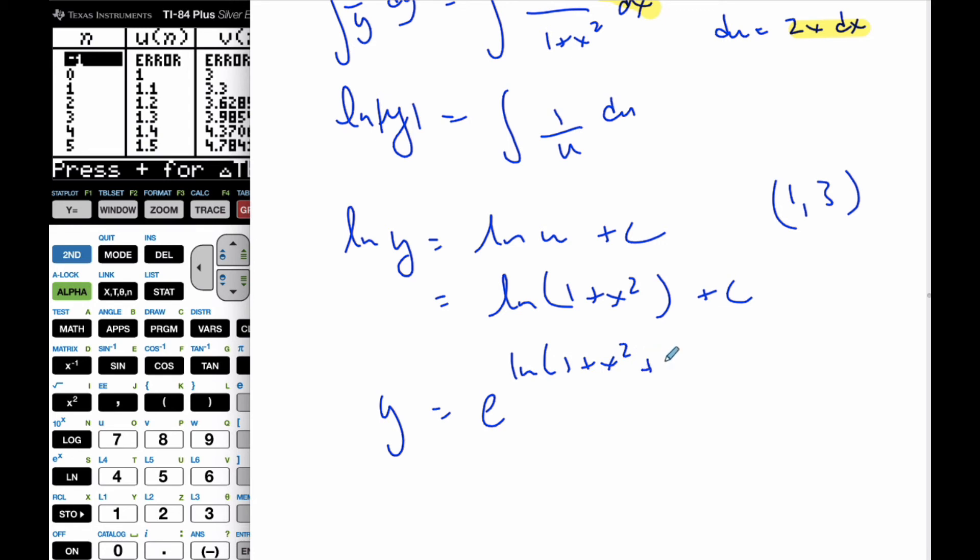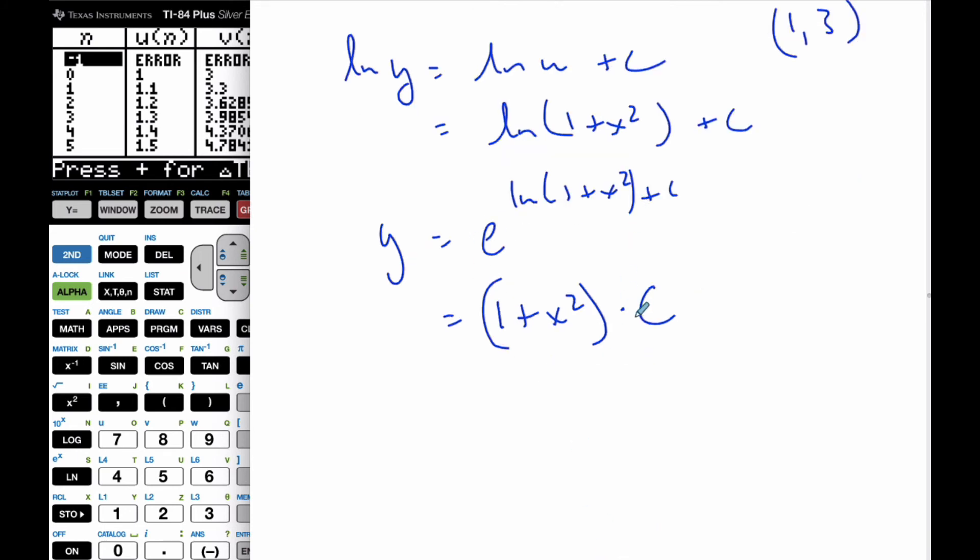I'm going to first change it to y. So I'm going to put this e to the ln(1 plus x squared) plus c, which I know this is (1 plus x squared) times e to the c, which is just some constant c. e to the c is just another constant c.